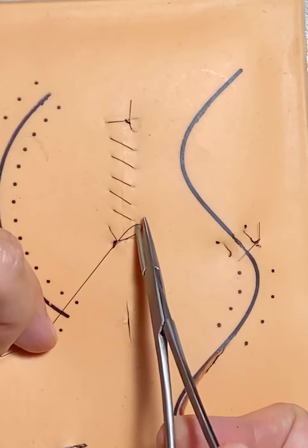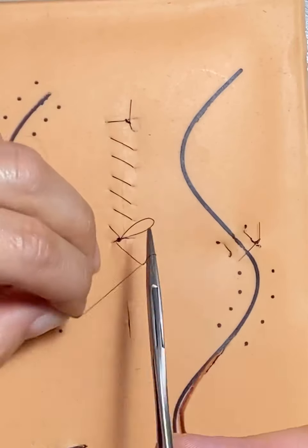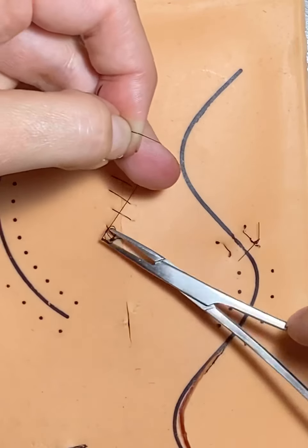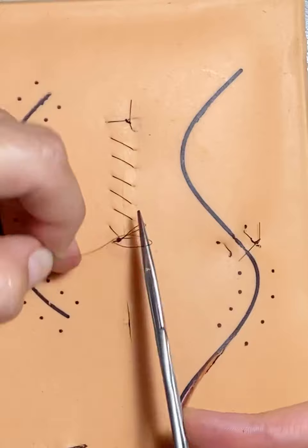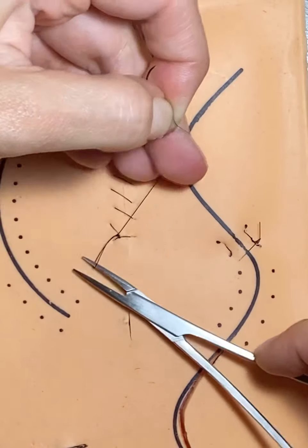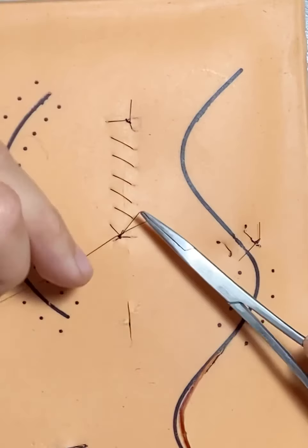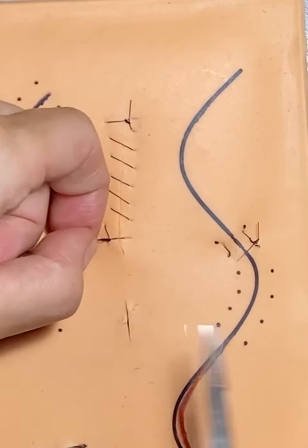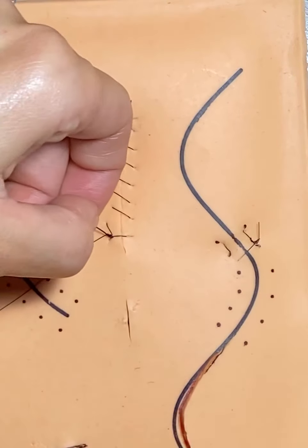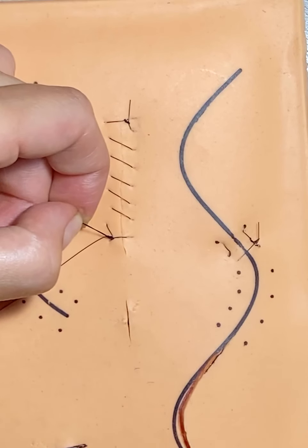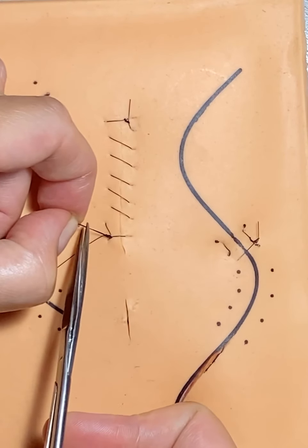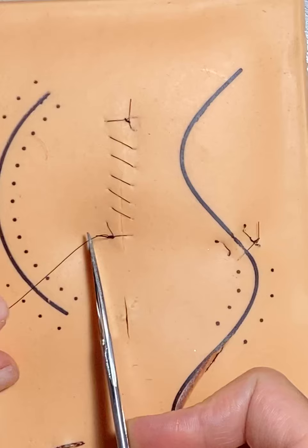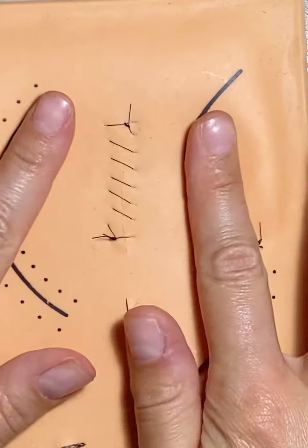I think that's number four and we'll do an extra two because we only have two knots holding this whole thing together. Five and six. And then we're going to cut our tail and our suture line at the end at the same length. And there's your baseball stitch.